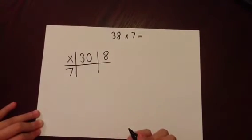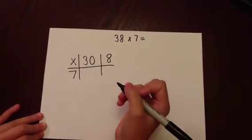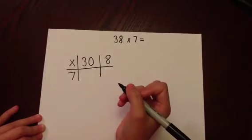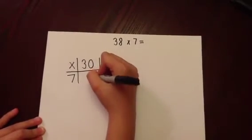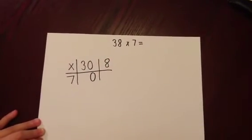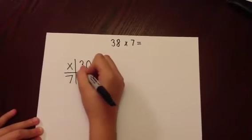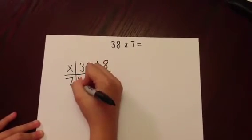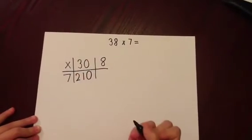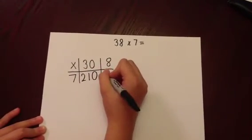To help multiply mentally seven lots of thirty, we can put the zero already in, as we know that anything multiplied by ten is going to end with a zero. So seven multiplied by three is twenty-one, and when we write this in, we can see that seven lots of thirty are two hundred and ten.